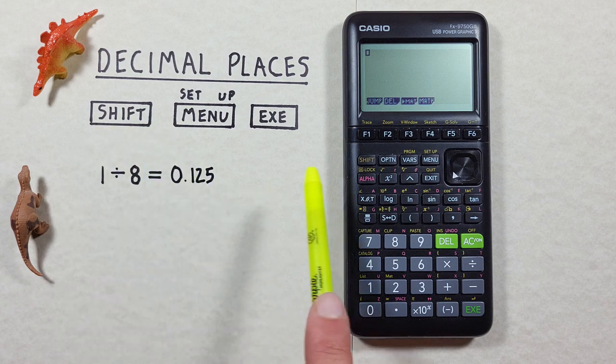To do that we'll use the shift key that looks like this located here, the menu key with the shift function of setup that looks like this located here, and the exe or execute key that looks like this located down here.